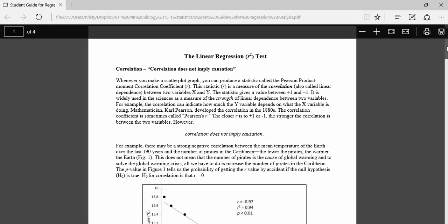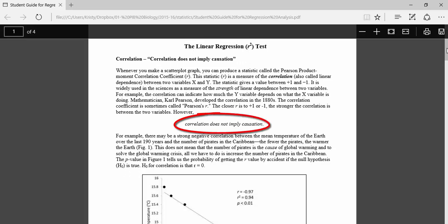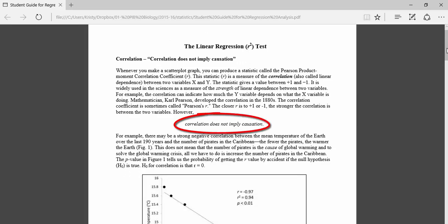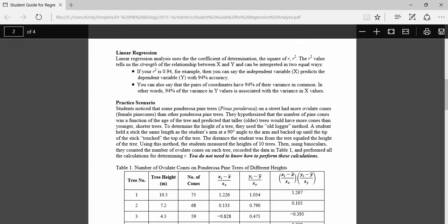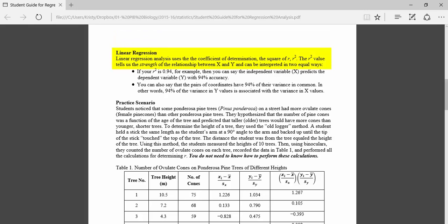They make the point here of saying that correlation does not imply causation. So even though the regression test tells us how closely correlated two things are, it doesn't necessarily mean that one causes the other, although in some cases it could. Linear regression analysis uses the coefficient of determination, which is the square of R or R squared.